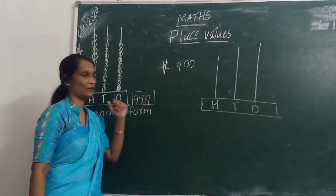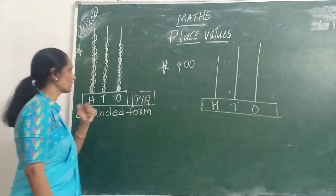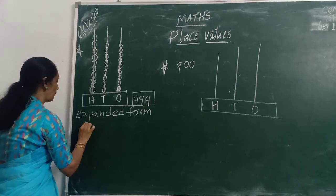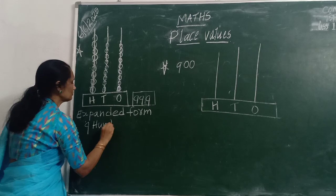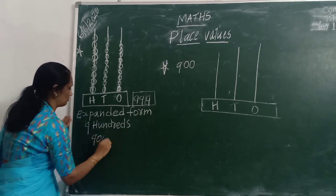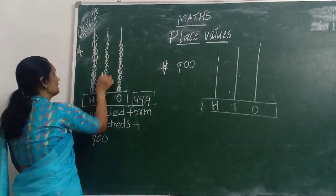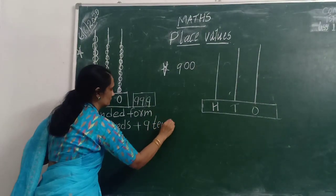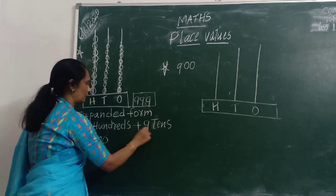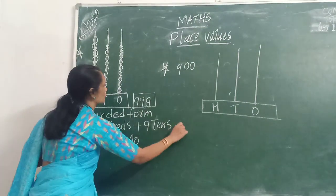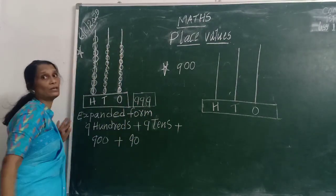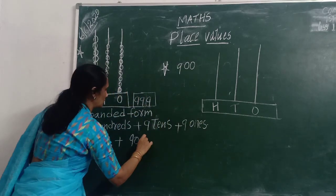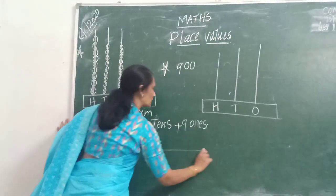How to represent 999 in expanded form? This 9 is in the 100s place, so we write 900. Plus, in the 10s place there are 9 beads — so 9 tens, that is 90. Next, in the 1s place, 9 ones — that is 9. So this is the expanded notation of the number: 900 + 90 + 9.